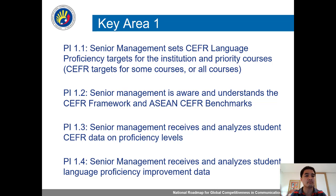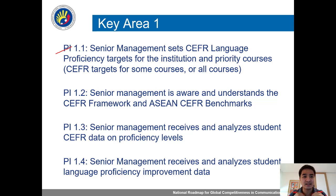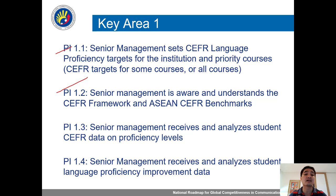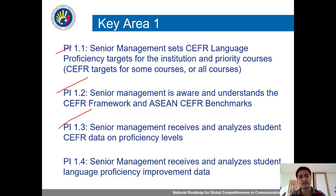Under key area one we have four points. 1.1 is that senior management is aware and can set CEFR targets — what should the target be, should it be B2 for all, etc. 1.2 is they understand the CEFR framework and at least ASEAN CEFR benchmarks — what Malaysia is asking for, what Vietnam is asking for, what Thailand is asking for — so they can make decisions based on what the post-pandemic global workforce requires. 1.3 is that when they get the data, they can understand it — like if 30% of students are at A2, they know what that means. And 1.4 is that they can look at pre-test and post-test results — first year scores versus fourth year scores — and understand whether these students improved or not.